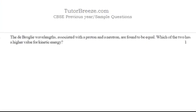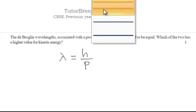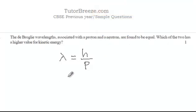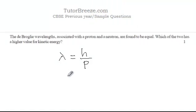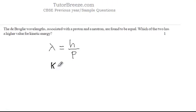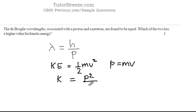The de Broglie wavelength is given as lambda equals h by p, where p is the momentum and h is the Planck's constant. This can be written in terms of kinetic energy. The kinetic energy is equal to half mv squared and the momentum p is equal to mv. So you can write the kinetic energy, denoted by k, as p squared over 2m.